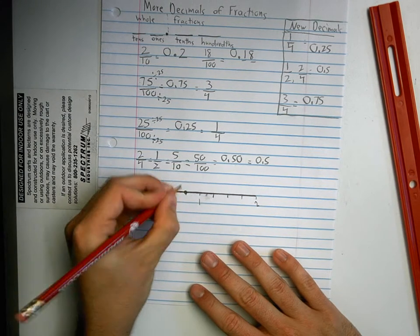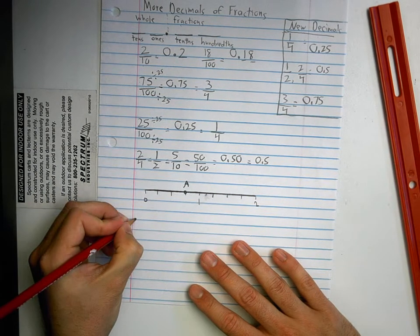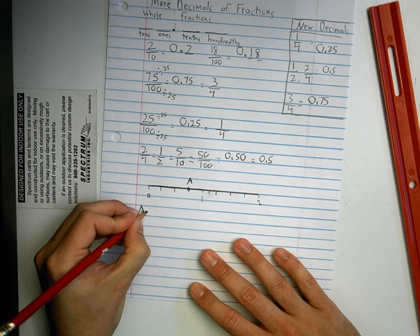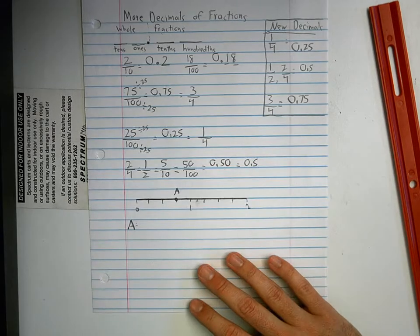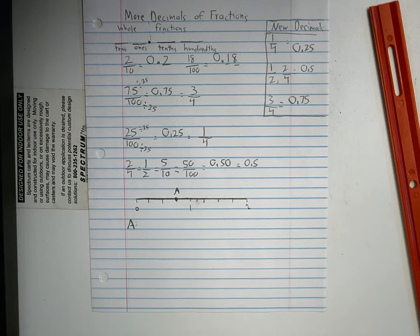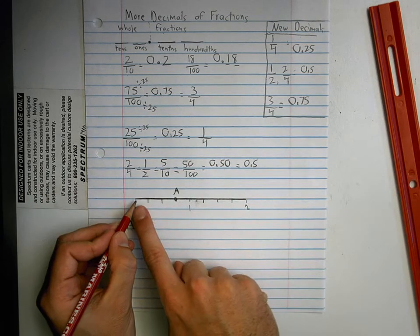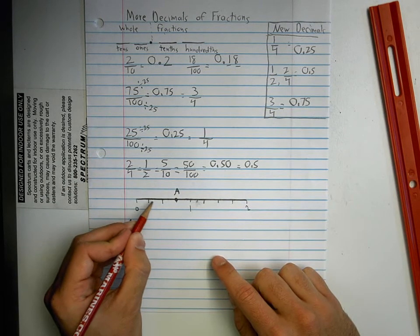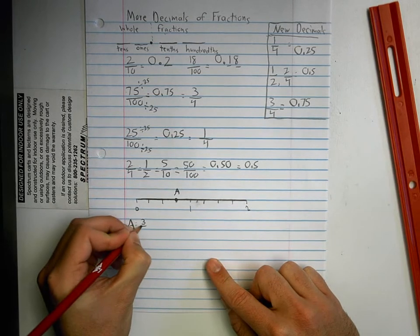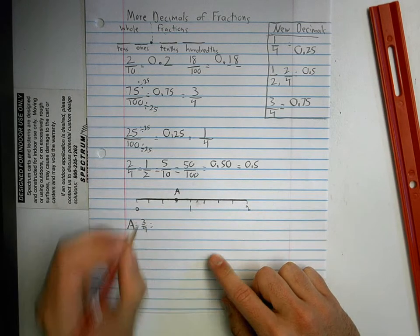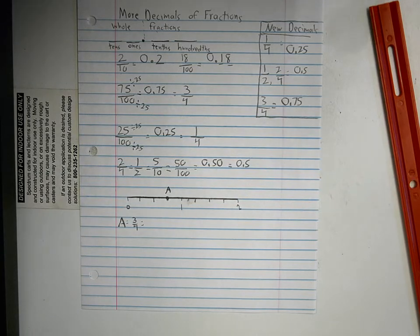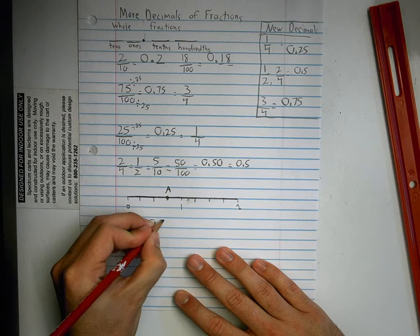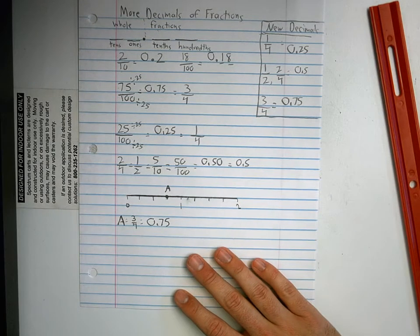So, I have point A right here. Who can tell me what the fraction and the decimal for point A is going to be? If this is zero, this is one. What's the fraction going to be? Three-fourths? Yeah, because it's broken up into one, two, three, four pieces, and that's one-fourth, two-fourths, three-fourths. What's the decimal for three-fourths? Emma? Zero-point-seven-five. Yeah, zero-point-seven-five. Seventy-five-hundredths.